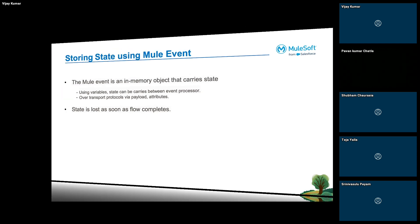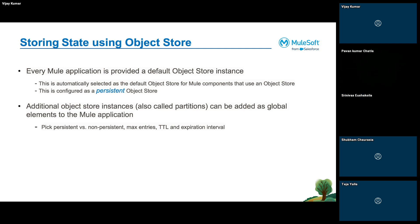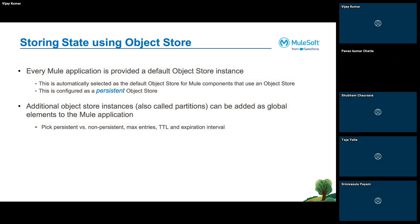Moving on to the next way: we can store state using object store. Object store is basically a key-value pair store mechanism which we use in MuleSoft, which helps us store data. In a Mule application it comes pre-wired with the default object store instance which automatically gets selected.